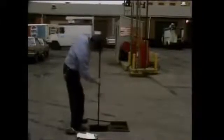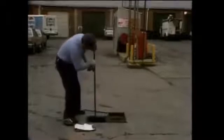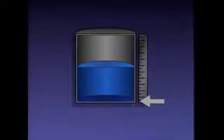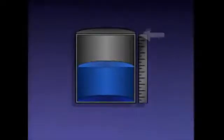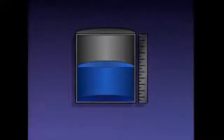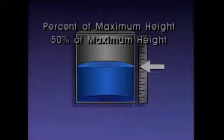The last process variable we'll discuss is level. Level can be defined as the position of a surface above or below a fixed reference point. For instance, if the reference point is at the bottom of the tank, measurements are taken from the bottom to the surface, indicating how much of the tank is filled. If the reference point is at the top of the tank, measurements are taken from the top to the surface, indicating how much of the tank remains to be filled. Another way the level in a tank can be expressed is as a percent of maximum height — for example, if the level is at the halfway mark, we can say the level is fifty percent of maximum height.